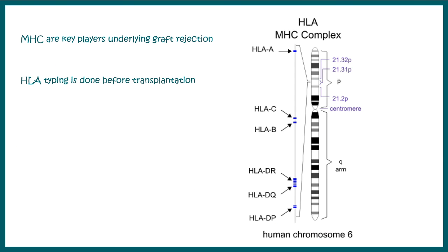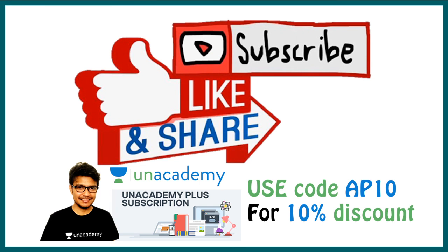To prevent graft rejection, specific precautions are taken. First and foremost is HLA typing, since MHC molecules are key players in the sensitization phase of graft rejection. HLA typing is performed before transplantation. A separate video will cover HLA antigens and HLA typing in more detail. If you liked this video, give it a thumbs up, like, share, and subscribe.